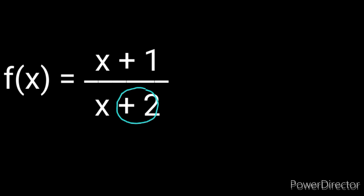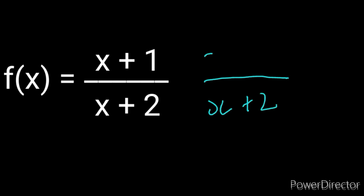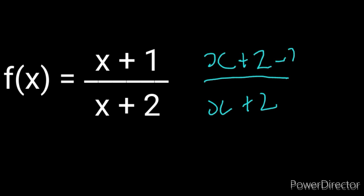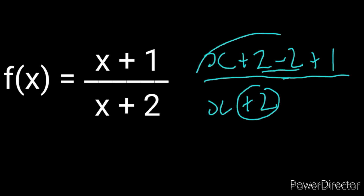Our goal is to come up with a plus 2 also at the numerator. The denominator is x plus 2, and we're going to have x. Notice this is x plus 1, but I'm going to add a 0 here. That 0 will be in the form of 2 minus 2. Notice that I added this and subtracted it at the same time — that's the same as adding 0. Basically, I did not change anything; I only changed how it looks.